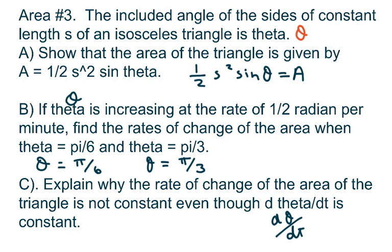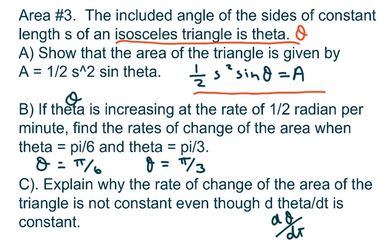Hey everyone, we're going to talk about area. We have the included angle of the sides of constant length S of an isosceles triangle is theta, and we want to prove that the area of the triangle is given by one half S squared sine of theta equals area.